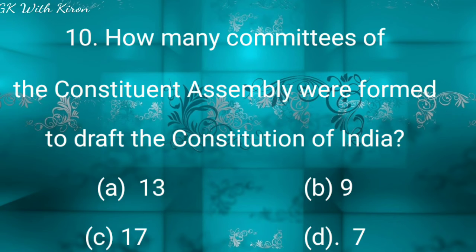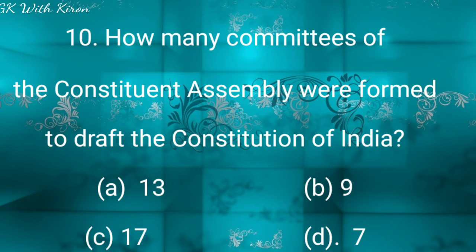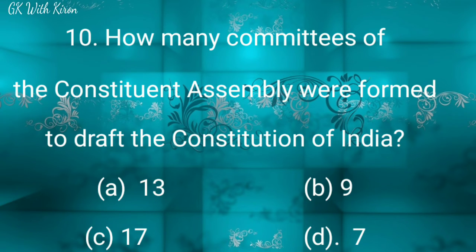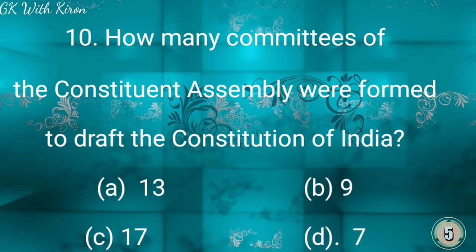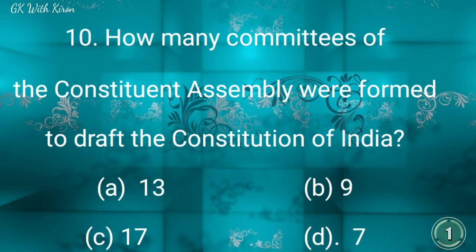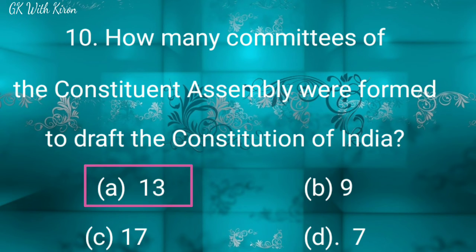Question ten: How many committees of the Constituent Assembly were formed to draft the Constitution of India? Option A: 13, option B: 9, option C: 17, and option D: 7. The correct answer is 13.